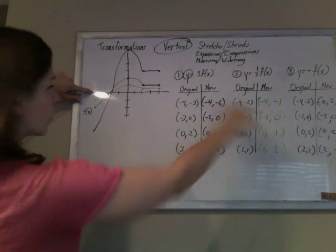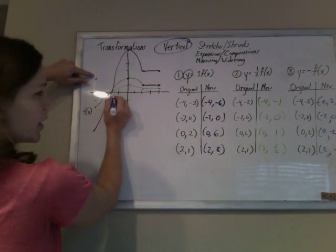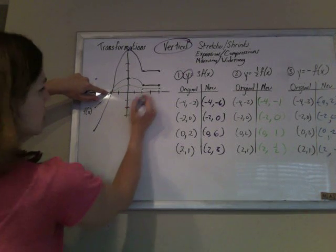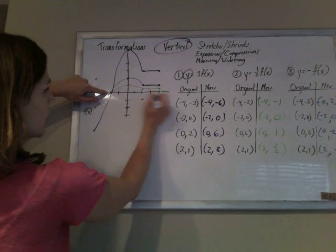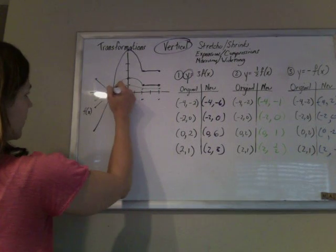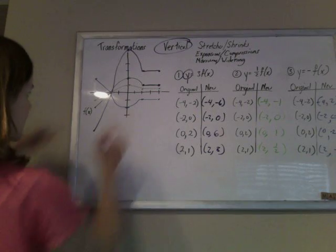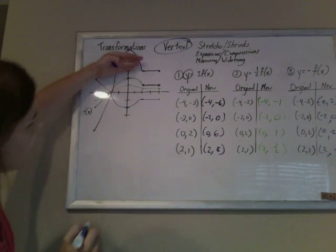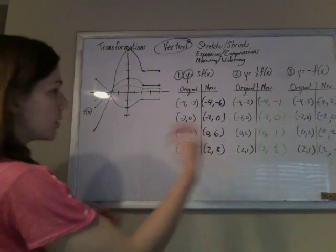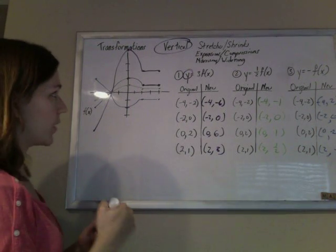So, negative 4, positive 2 is up there. Negative 2, 0. 0, negative 2. 2, negative 1. And this point here would have followed. So, we've got this thing. And if you can see the original black graph in there, you can see that it flipped over. Well, flipping over is just a fancy way of saying multiply the y values by a negative 1.